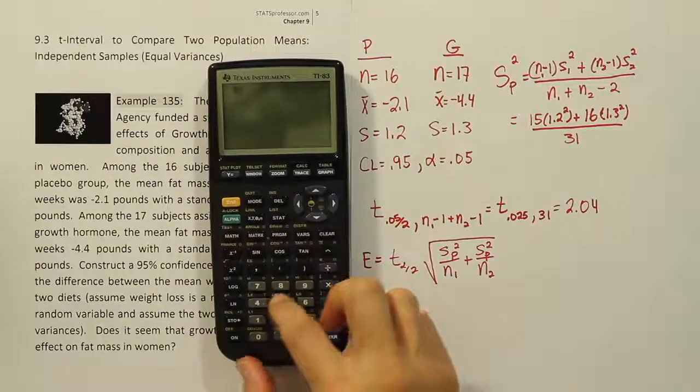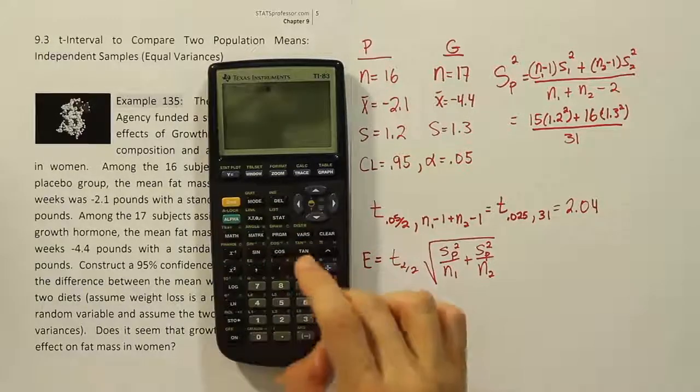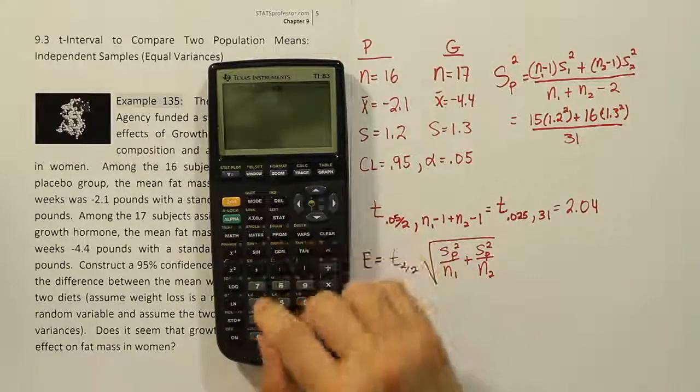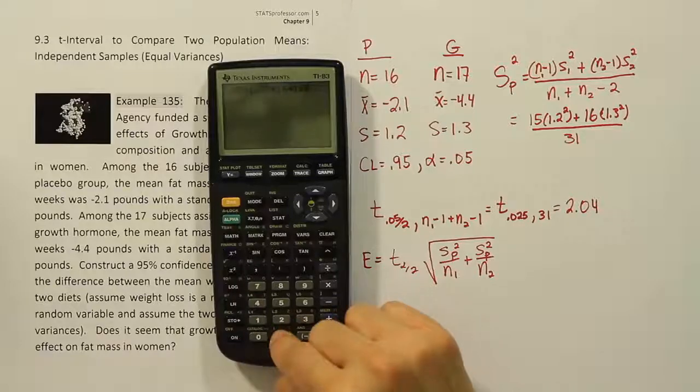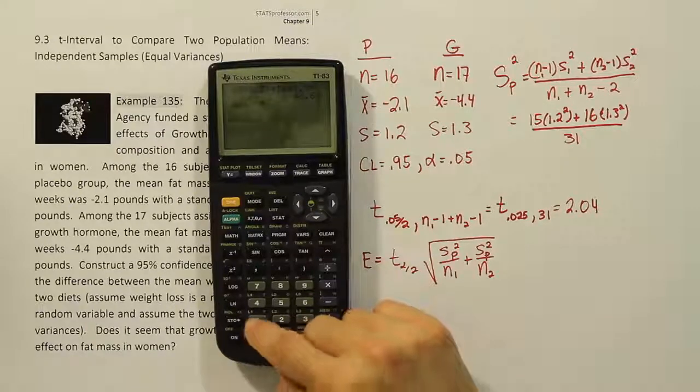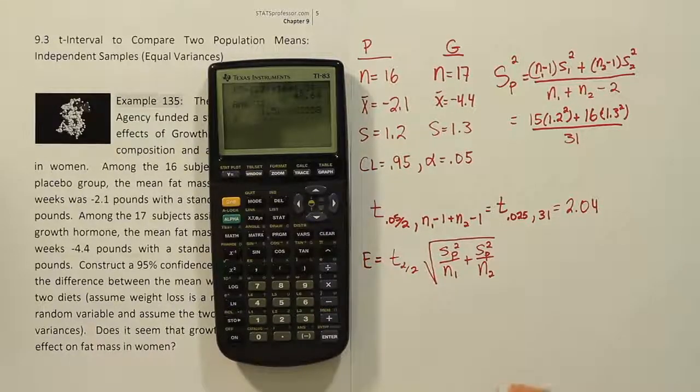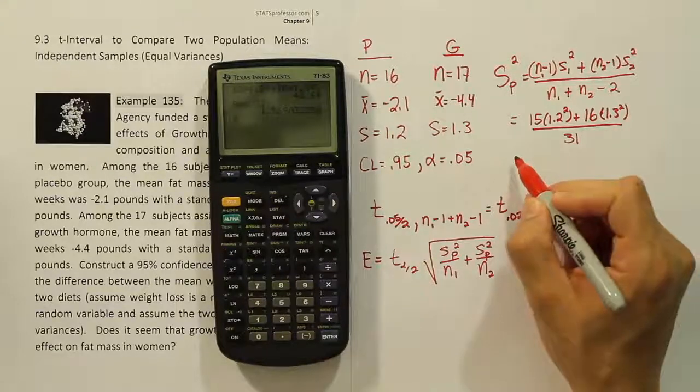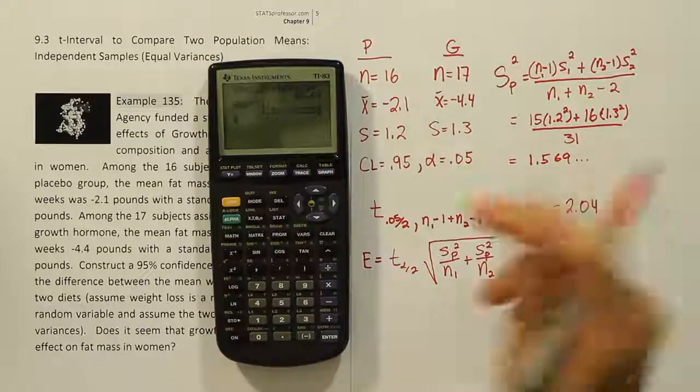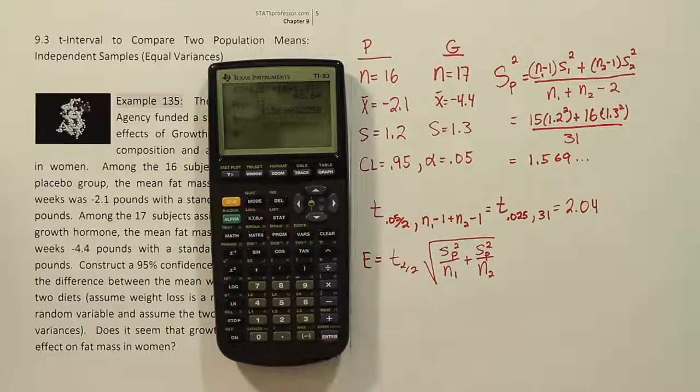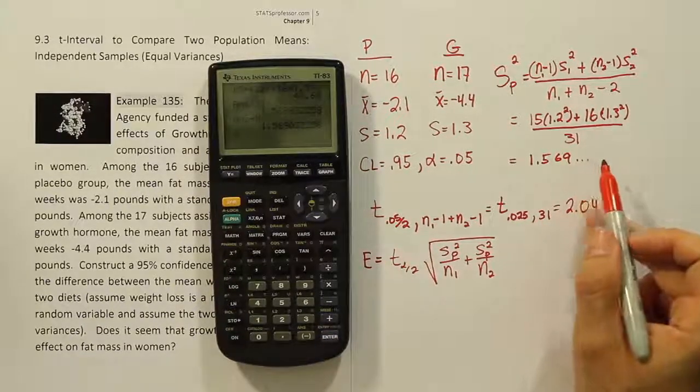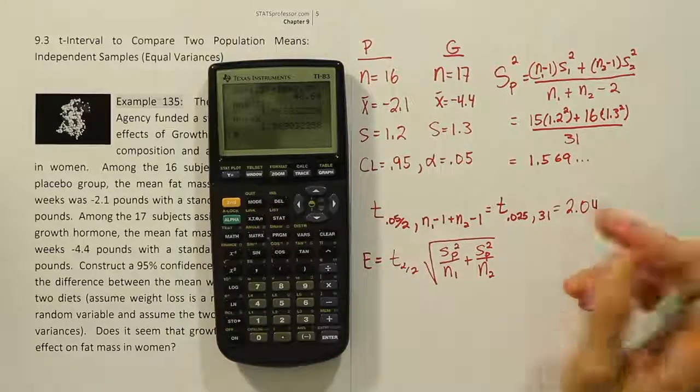So we'll have 15 times 1.2 squared plus 16 times 1.3 squared. And then hit enter. You get 48.64 and you'll divide that by 31. And when you're done, you get 1.569, et cetera. Okay, so we end up having the answer to be 1.569. I'm going to actually store that in my calculator so we can use it later. I'll store it as x. But if you're not going to use the store feature in the calculator, then just take a few decimal places. I would recommend using at least 3 or 4, no less than that.